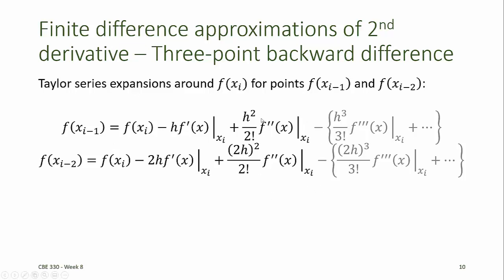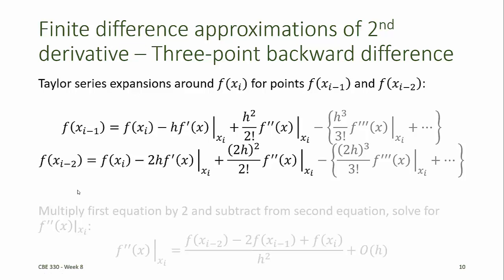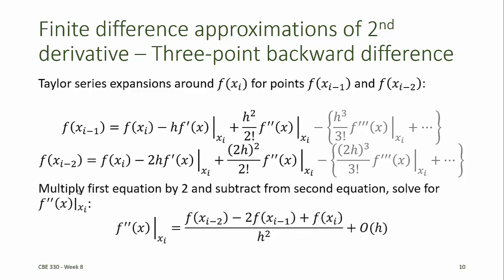However, instead of eliminating the second order terms, we want to eliminate the first derivatives of f with respect to x. So we'll multiply the first equation by 2 and subtract it from the second equation, then solve for the second derivative of f at x. This results in a formula for the second derivative of f at x using the points at xi minus 2, xi minus 1, and xi — that is, a three-point backward difference estimate.